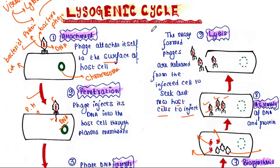The lytic cycle is also occurring within the lysogenic cycle. The first few steps are unique to the lysogenic cycle — where the viral DNA is inserted inside the bacterial chromosome and becomes prophage, and the bacterial cell undergoes cell division and replication of the prophage. Up to this point is unique to the lysogenic cycle, and after that the steps are common to both the lytic cycle and the lysogenic cycle.